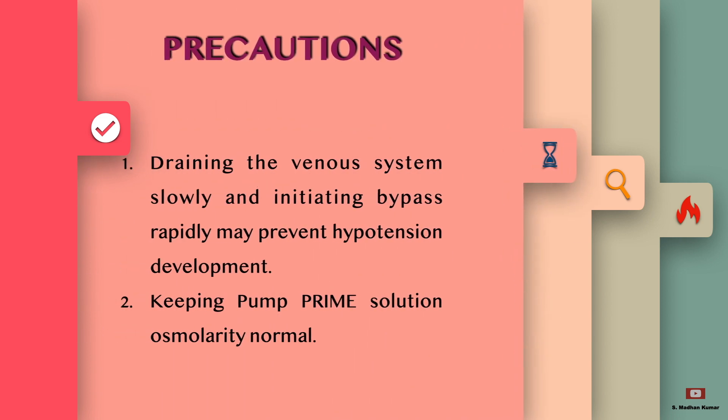It can be prevented by draining the venous system slowly and initiating bypass rapidly to prevent hypotension development. Keeping the pump prime solution osmolarity balanced or normal is also important.